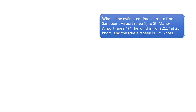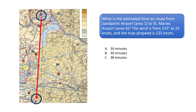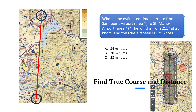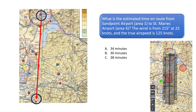Question 2. What is the estimated time and route from Sandpoint Airport in Area 1 to St. Marie's Airport in Area 4? The wind is from 215 degrees at 25 knots and the true airspeed is 125 knots. The first step is to calculate the true course and distance between each airport. Using the ForeFlight app we can use the ruler function to find the magnetic heading of 167 degrees and the distance of 58 nautical miles.